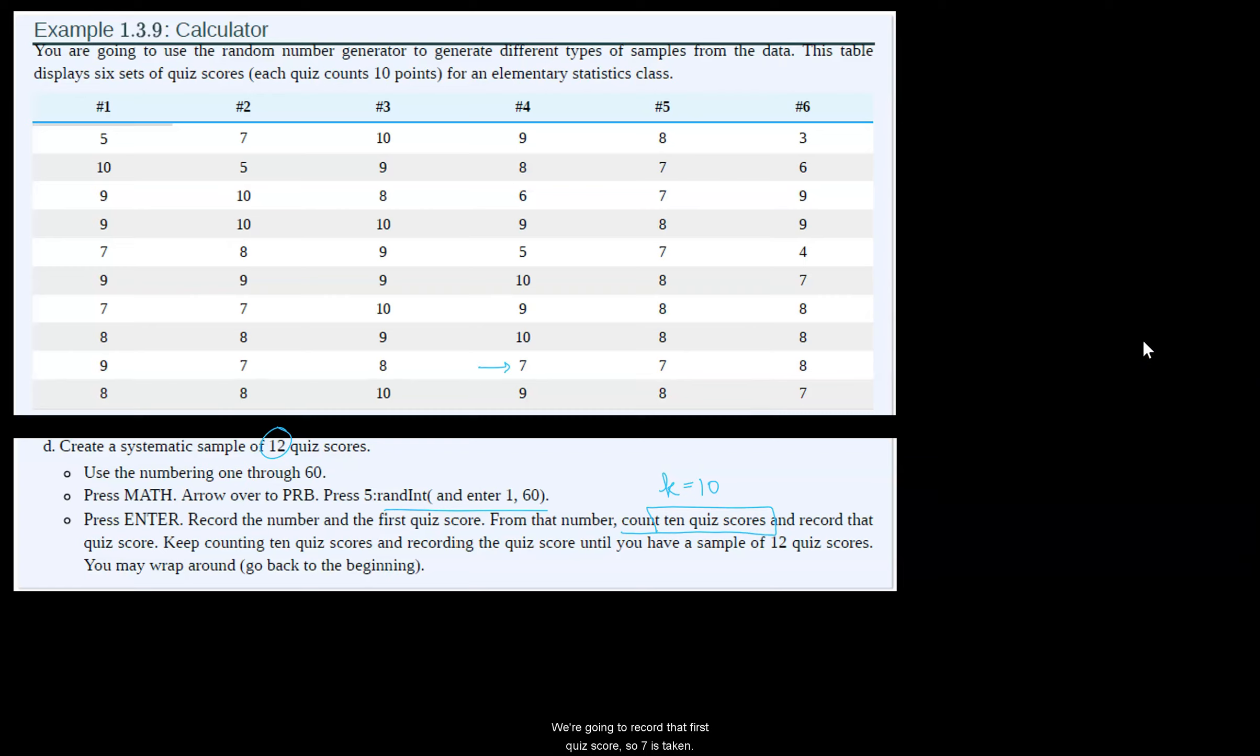We're going to record that first quiz score. So 7 is taken. Then we count 10 quiz scores. 1, 2, 3, 4, 5, 6, 7, 8, 9, 10. Makes it kind of nice because then we take this row.